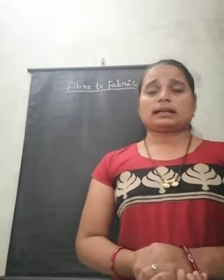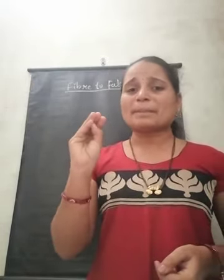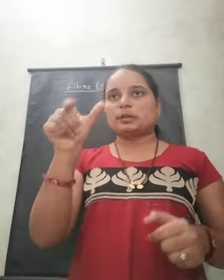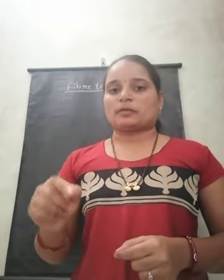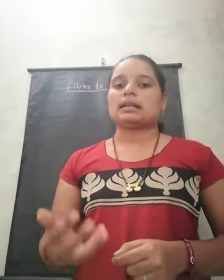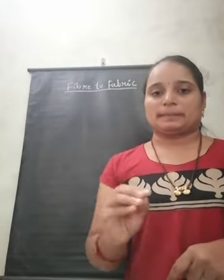So let us do one activity. Take a clean A4-size paper and collect some variety of cloth materials like cotton, polyester, jute, nylon, and woolen. Paste small pieces of these cloths on the paper, and below each piece write what the fiber or cloth is made up of — whether cotton, polyester, silk, or woolen. This is the first activity.